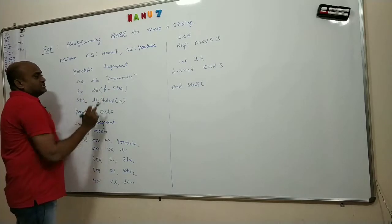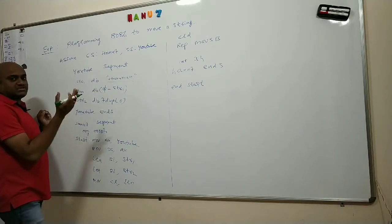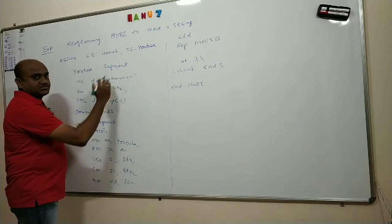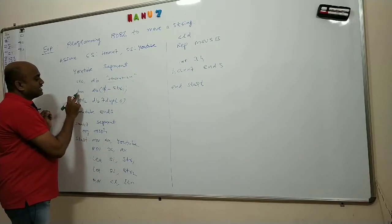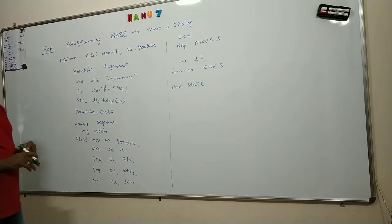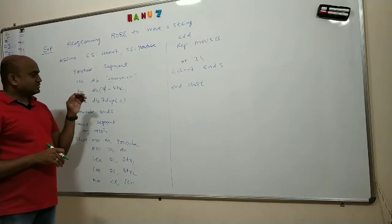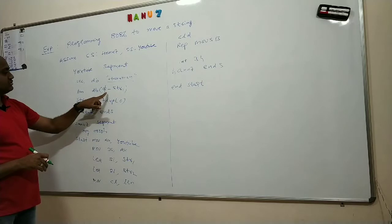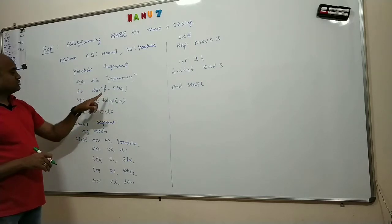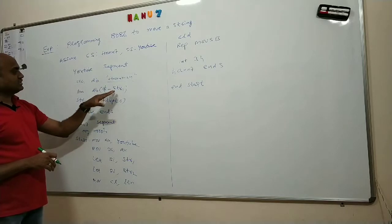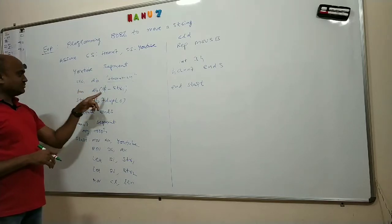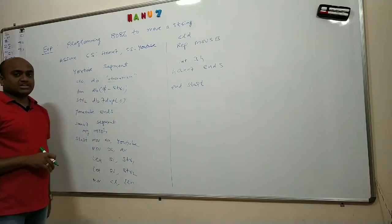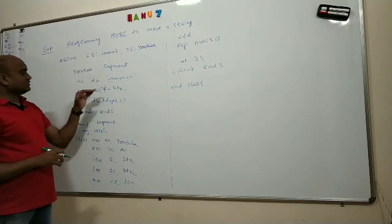Now in order to move a string from one place to another, I have to know the length of this string — how many number of times I have to move it. In order to calculate the length, you have to use the command dollar minus string name. So I wrote dollar minus str1, so I got the length of the string: 7 will be written into the variable length. I am indicating that this length is also of byte size, so I am allocating a byte of memory to store the length of str1.